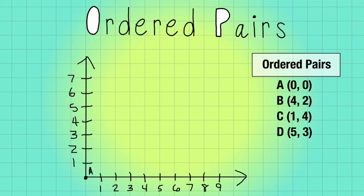So now let's do B. I'm going to go over four, one, two, three, four, and I'm going to go up two, one, two, and I'm going to put my dot there and B.